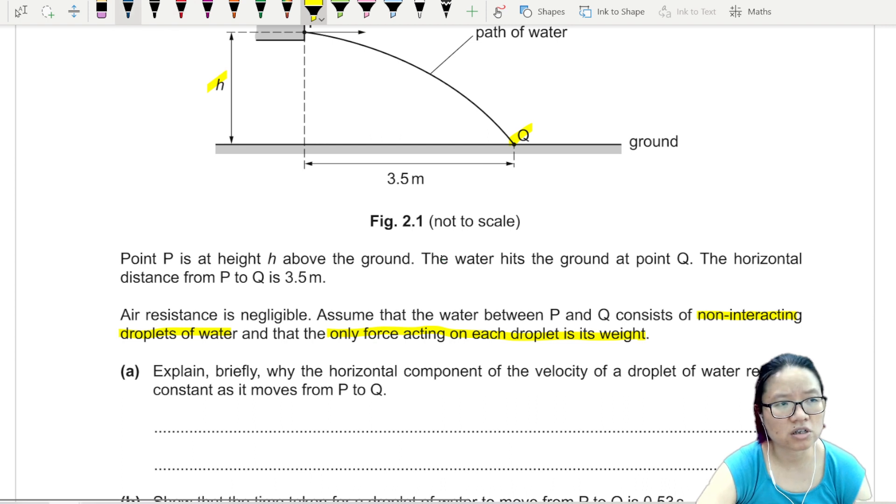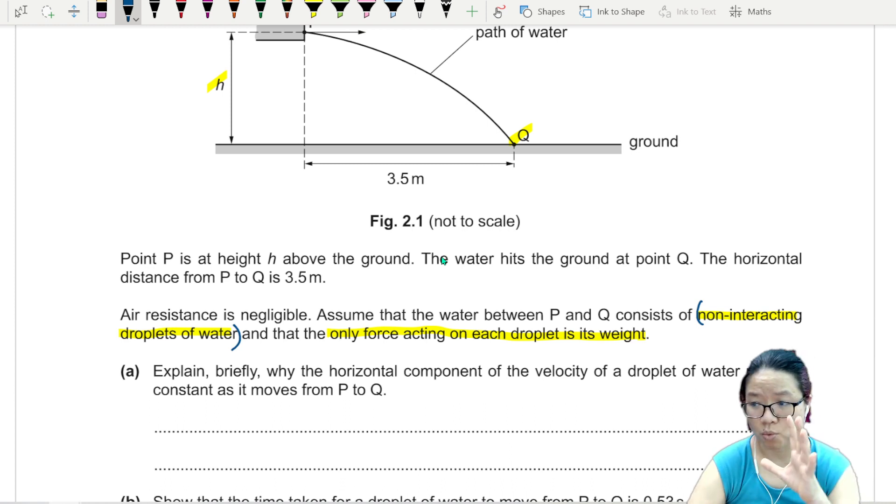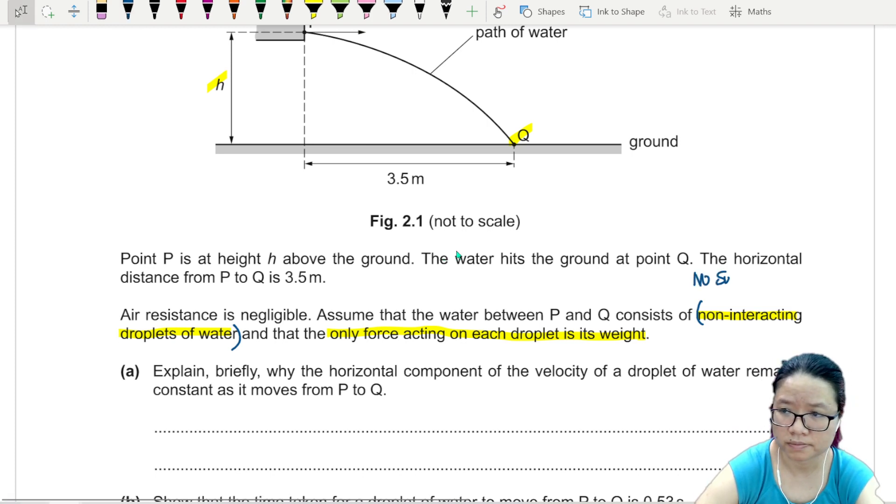What is non-interacting droplets of water? Meaning water droplet number one and water droplet number two, they won't have surface tension. No surface tension between water droplets, water molecules.